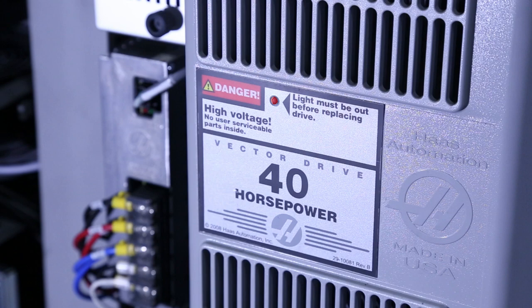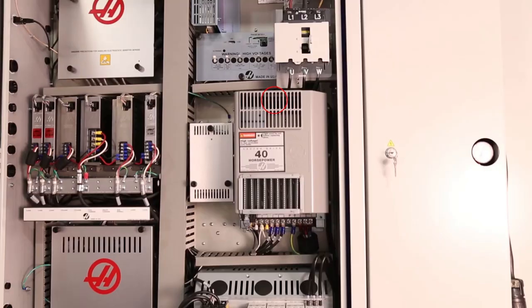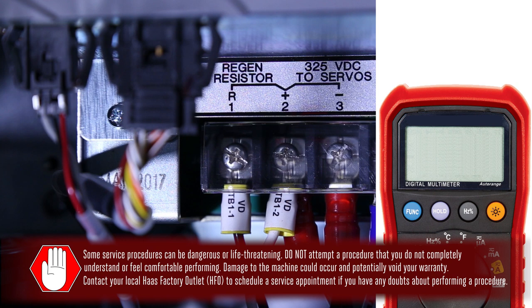Before you start, set the main circuit breaker to the off position and wait until the red LED on the vector drive goes out. If the LED is still on, there may be a lethal level of voltage on the DC bus. Before you perform any operation on the vector drive, make sure the LED has gone out completely.